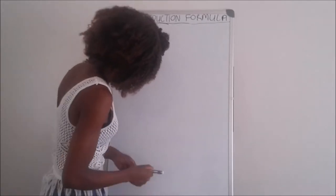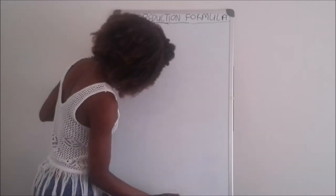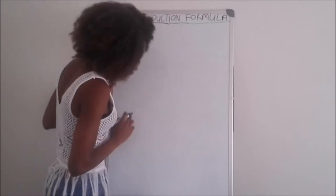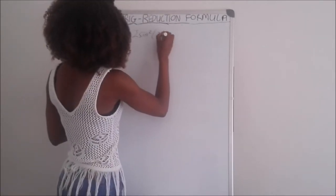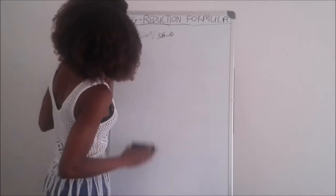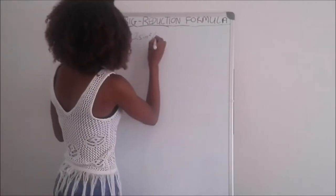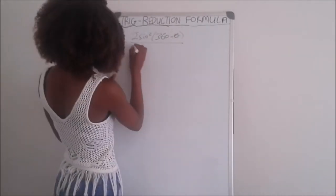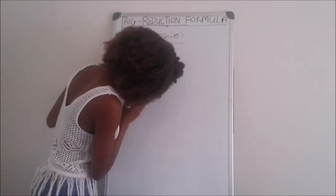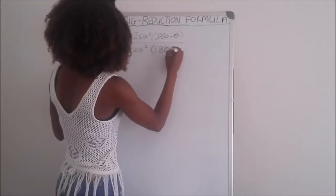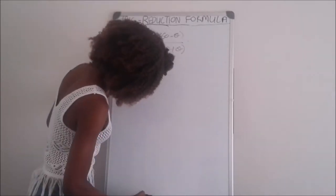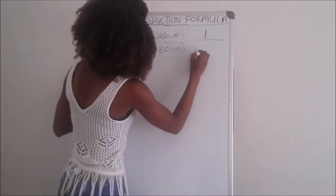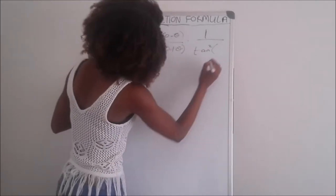The first example says: 1 plus 2 sin squared (360 minus theta), divided by cos squared (180 plus theta), multiplied by 1 divided by tan squared (180 minus theta).